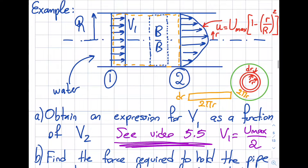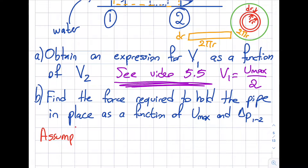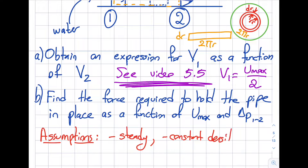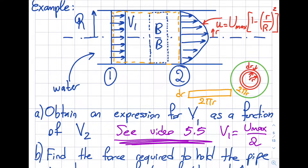Step two is the selection of the control volume. I drew that for you as the orange line — that's all you need to show. Step three is to look at the assumptions. Is this steady? Yes, no time dependence. Is this constant density? Yes, because it's water. Is this uniform flow? I'll call it uniform at cross-section one — so we have about two and a half special cases here.